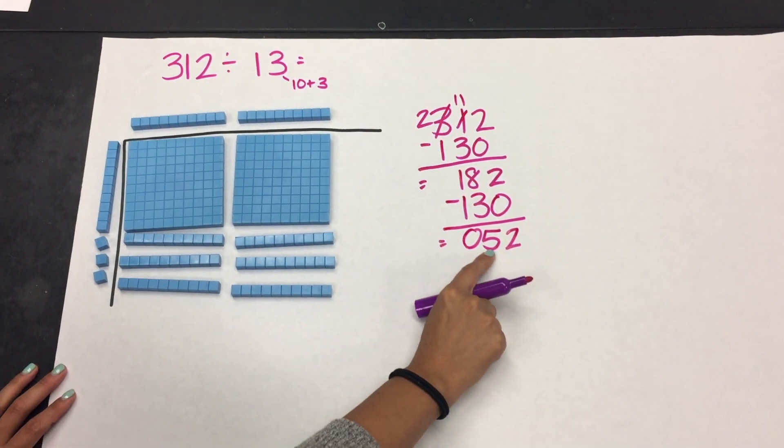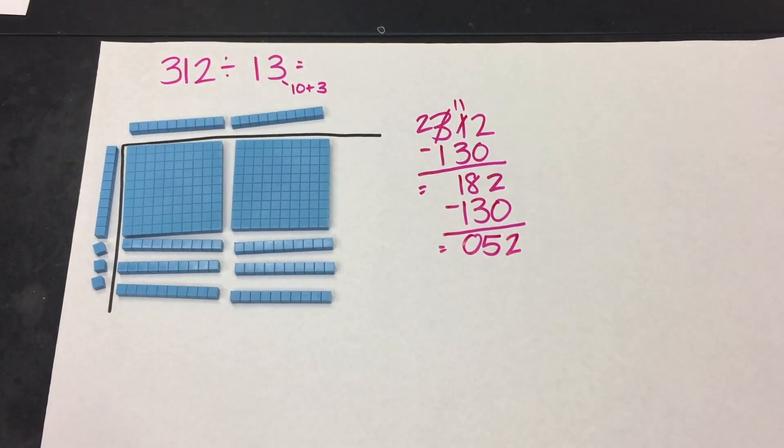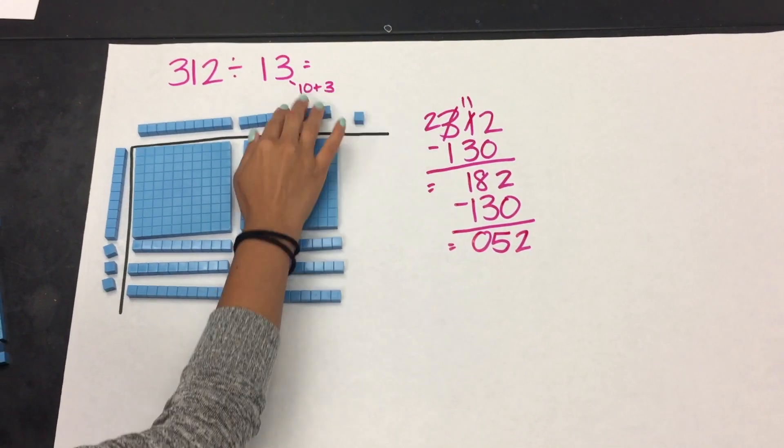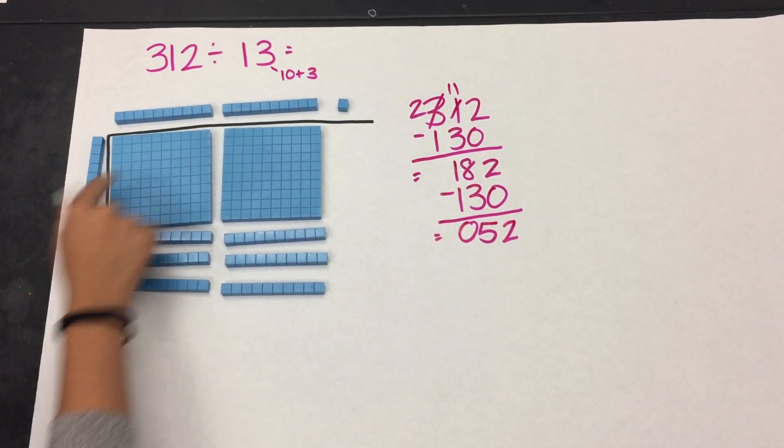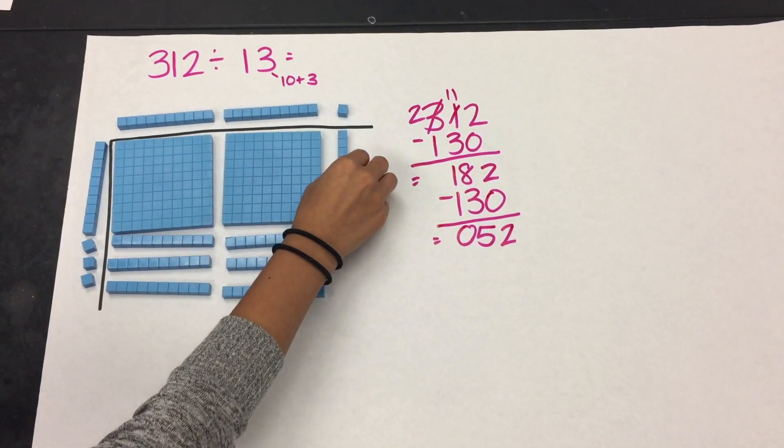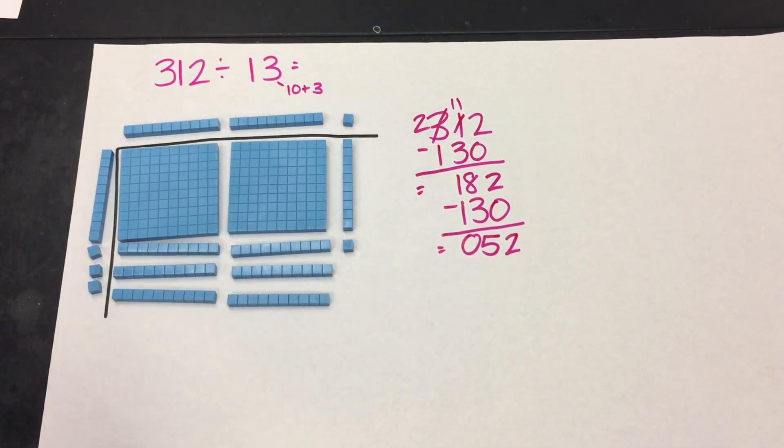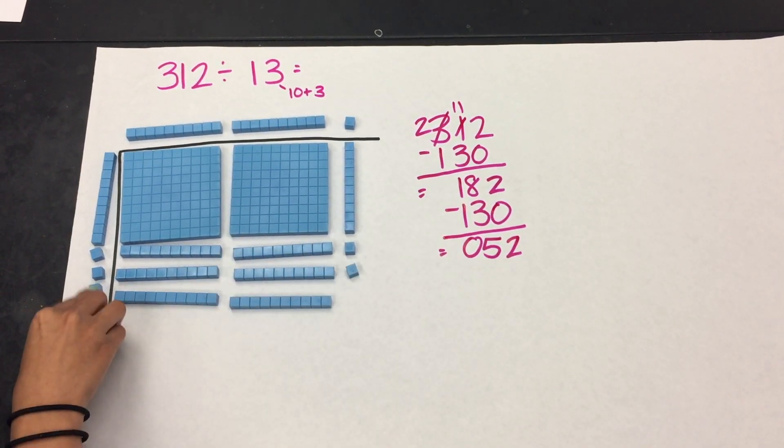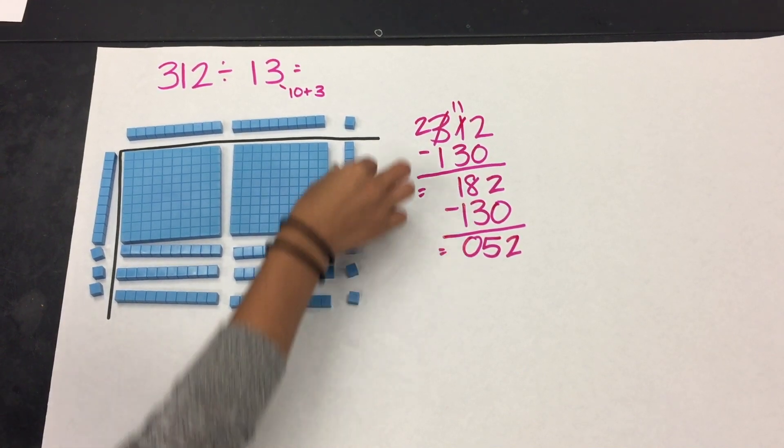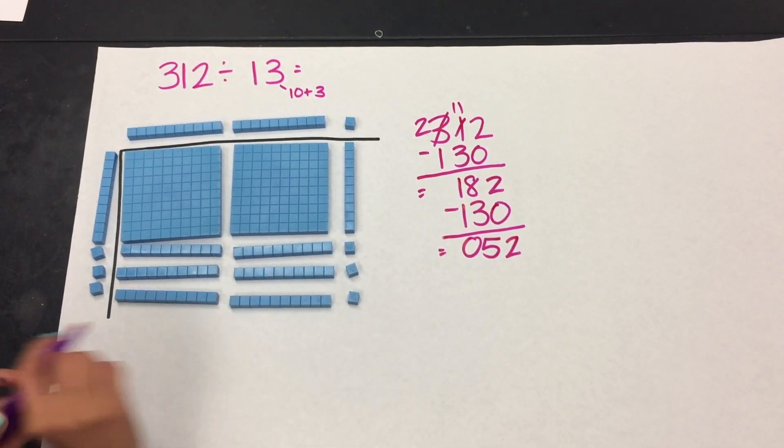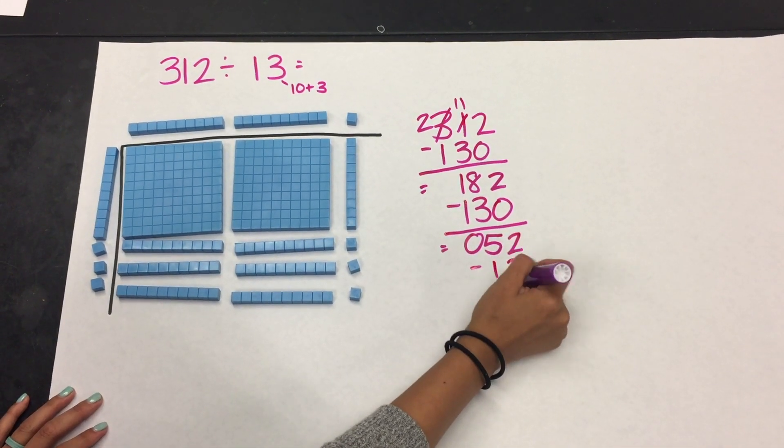And when I see I don't have enough to put down another 10, so I'm going to start putting down 1s for my quotient. So 10 times 1 is 10, and 1 times 1 is 1 for each section. So now I have 13 that I need to subtract.